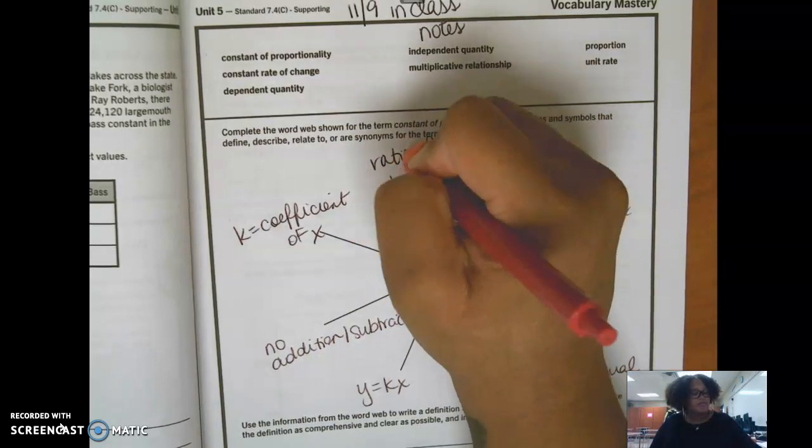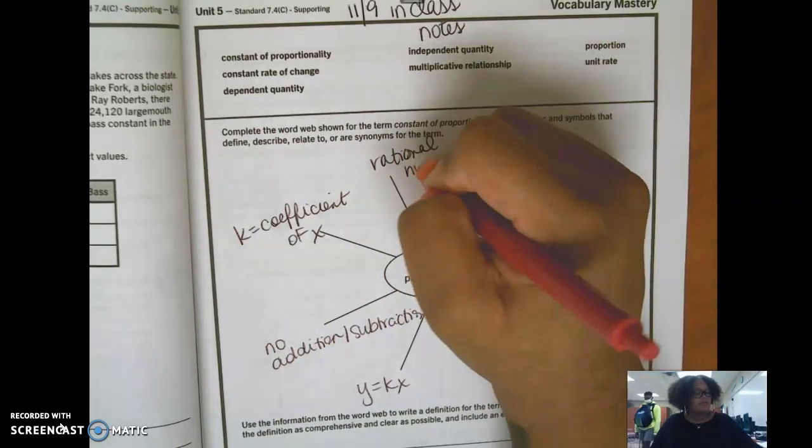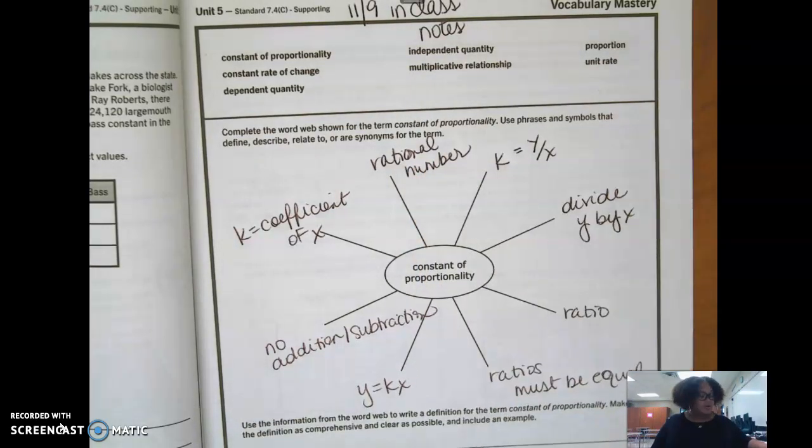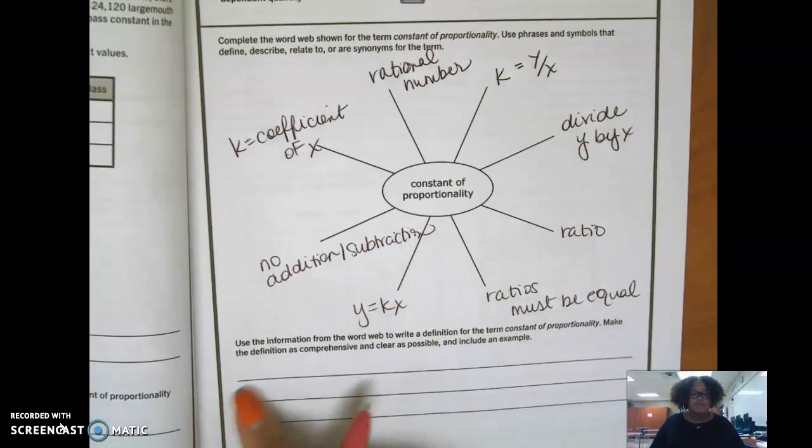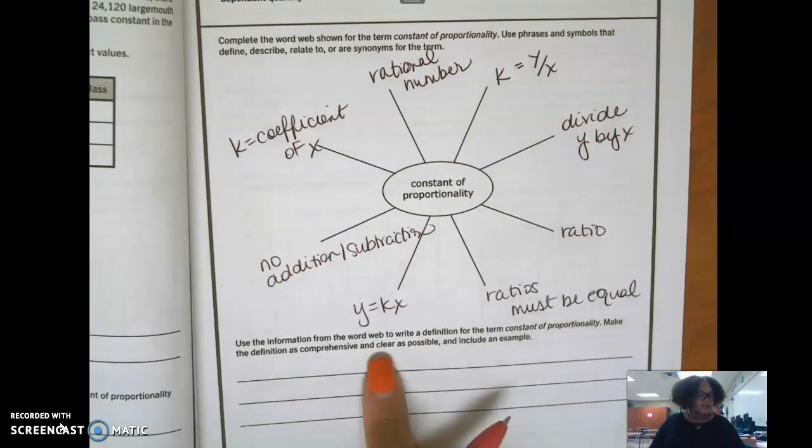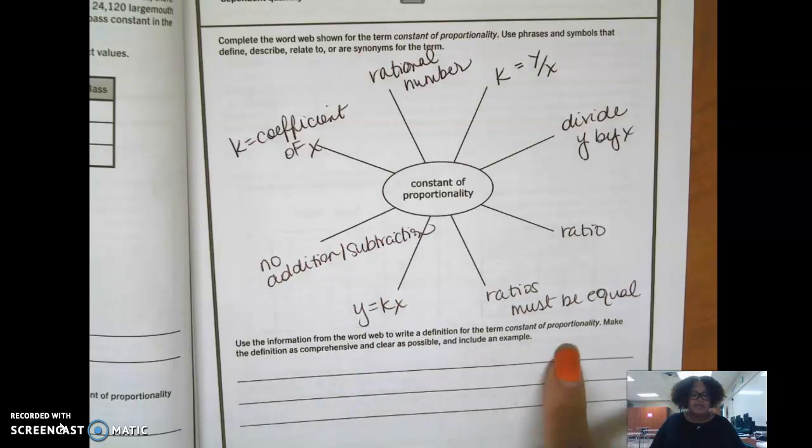Hey y'all, I'm recording a video. How are you? Oh, it's just you, good morning. So then down here, there are definitions. Use information from the word web to write a definition for the term constant proportionality. Make the definition as comprehensive and clear as possible and include an example.